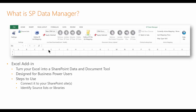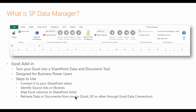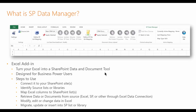Next, you define the list or library mapping — this is where you map Excel columns to SharePoint list columns. Then you retrieve data or documents from the source. If it's from one SharePoint list to another, you bring the data down. If it's from another system, you might use Excel's data connectivity to bring it in from databases, or use an export from a legacy system. Once the data is in, you can modify, edit, or change it in Excel using features like find and replace, then migrate it to a new SharePoint list, update an existing list, or insert new data. It supports all SP columns — lookups, multiple lookups, users, choice fields, and more. At this point, I'll turn it over to Declan for the demo.